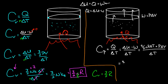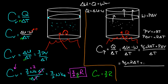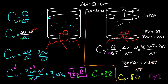So we have 3/2 nR delta T plus P times delta V, all over delta T. From the ideal gas law, PV equals nRT, so P times delta V equals nR delta T. Substituting: we get 3/2 nR delta T plus nR delta T, all divided by delta T. The delta T's all cancel, and we're left with the heat capacity at constant pressure equal to 3/2 nR plus nR, which is 5/2 nR. The molar heat capacity at constant pressure is 5/2 R.